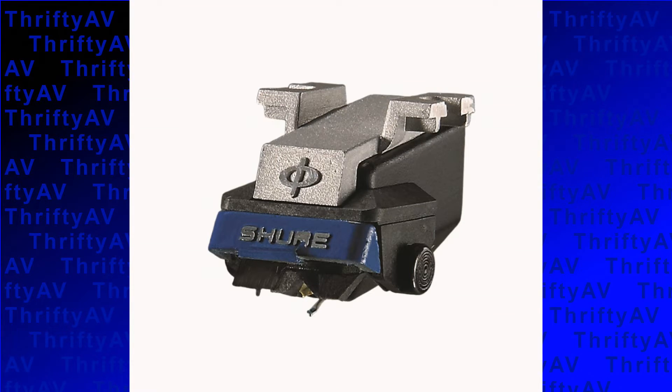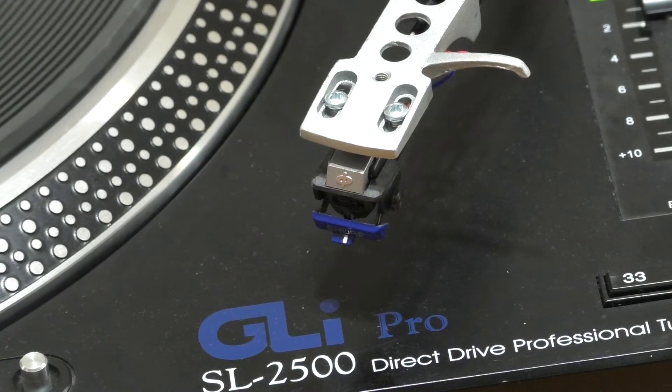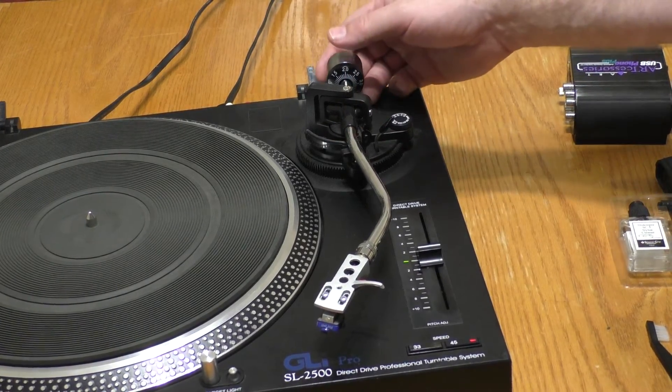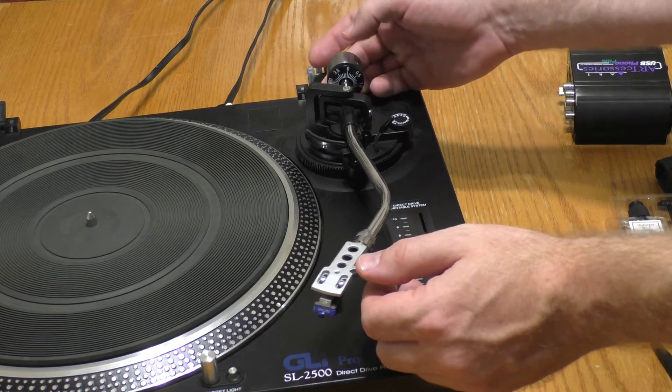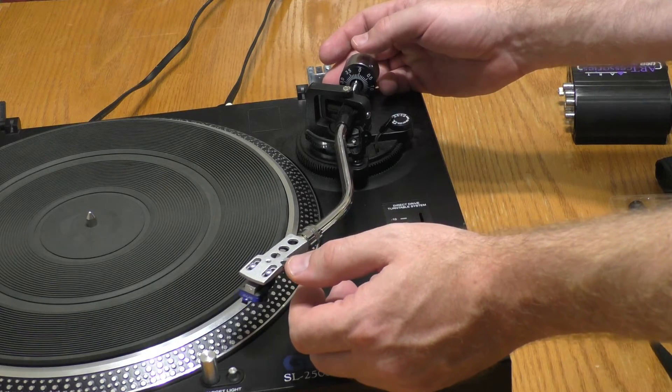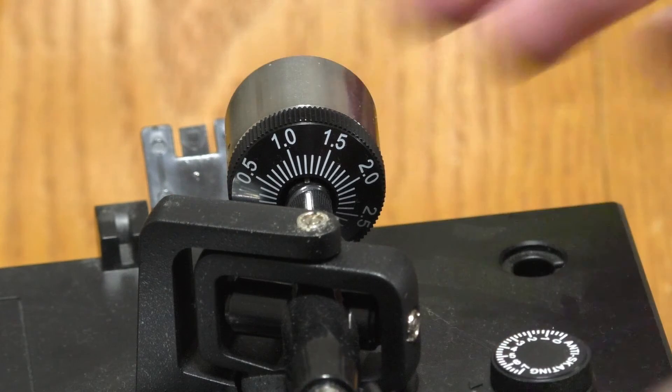Every turntable cartridge has an optimal tracking force. For example, my Shure M97XE is 1.25 grams without the brush engaged and 1.75 grams with the brush engaged. You can set this tracking force using the counterweight on the tonearm. Set the tonearm to a neutral balance and set the gauge to zero. Now turn the gauge until the appropriate tracking force is reached.